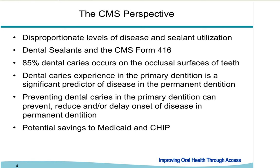We see similar disparities in untreated caries rates. For sealant utilization, data from NHANES studies shows sealant rates for ages 6 to 18 are much lower in Medicaid, rising only to a high of 27 percent, compared to 40 percent for private insurance patients. Those who are uninsured have a rate of only 20 percent, showing a great disparity between private insurance, Medicaid, and especially those with no insurance at all.